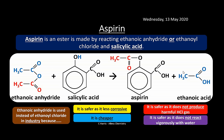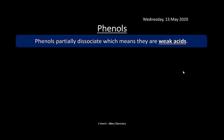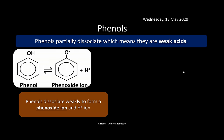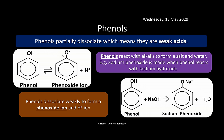Phenols partially dissociate, making them weak acids, behaving similarly to carboxylic acids. They dissociate weakly to form a phenoxide ion and H⁺ — phenol acts as a Brønsted-Lowry acid by donating a proton. Phenols also react with alkalis such as NaOH to form a salt (sodium phenoxide) and water — the same as any standard acid-base reaction, just with a benzene ring attached.